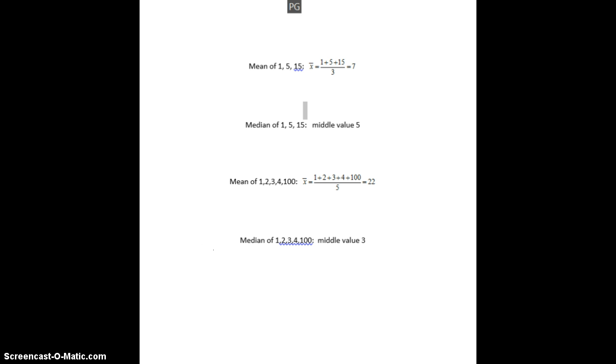When we describe data, there are usually three things that we use for our description. One is the center of the data. Two is the variability or the spread of the data. And three is the shape of the data. The first thing we're going to look at is the center of the data. There are two ways we can measure center: mean and median. One is preferable over another depending upon the type of data that you have. Let's look at the first thing.